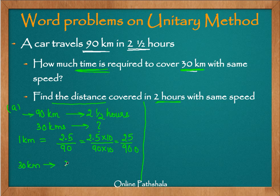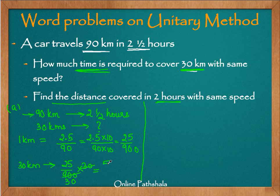Therefore, to cover 30 kilometers, the time required is 25 over 900 multiplied by 30. Since 30 times 30 gives 900, this simplifies to 25 over 30. Dividing numerator and denominator by 5, we get 5 over 6. So 30 kilometers is covered in 5/6 hours.